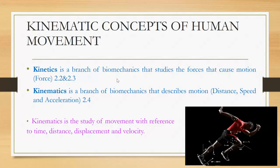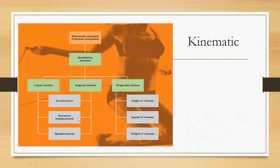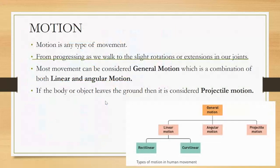All these things are measurable, so we call them quantitative — they're quantifiable as a number or value. Today's key terms are specifically linear distance, displacement, linear speed, and velocity. Anything that is moving is in motion. If an object or body leaves the ground, it's considered to be in projectile motion — airborne through the air. Most movement, though, is general motion, which is a combination of both linear and angular motion.